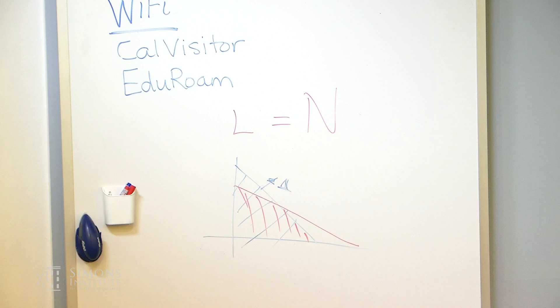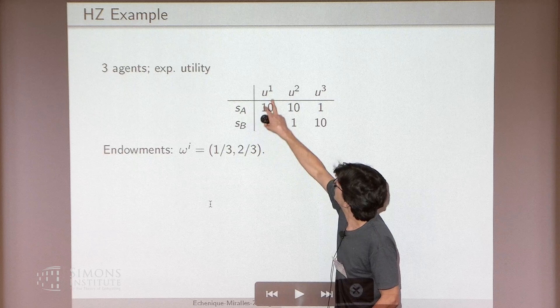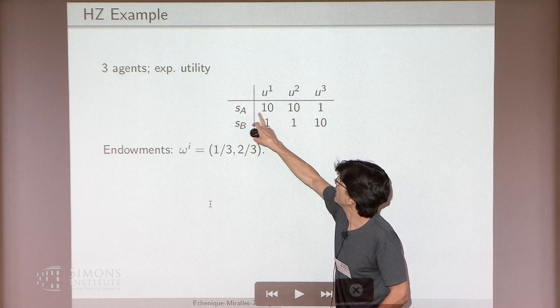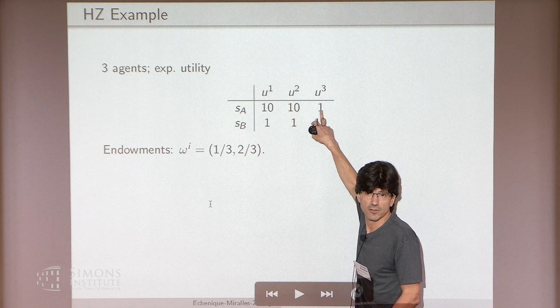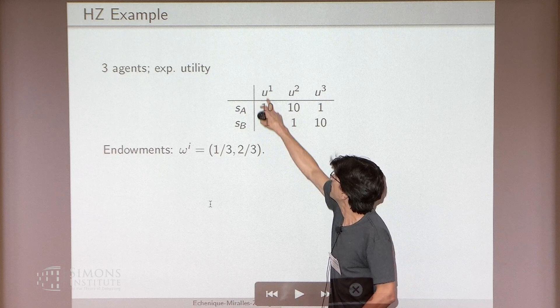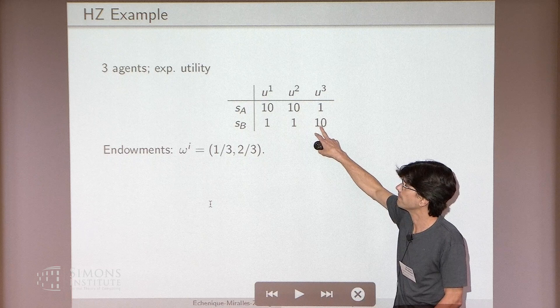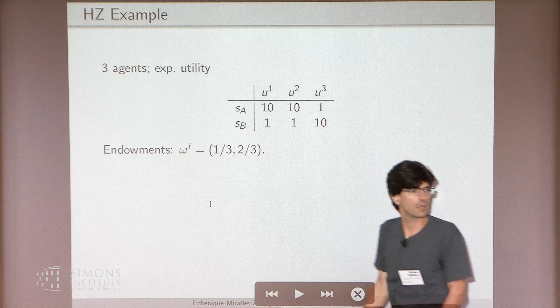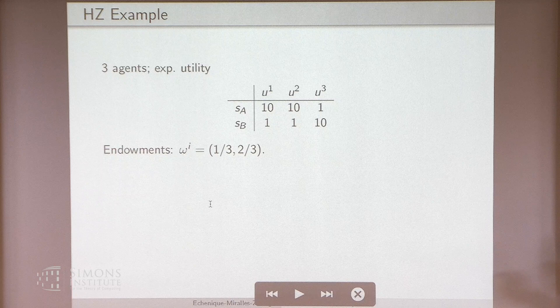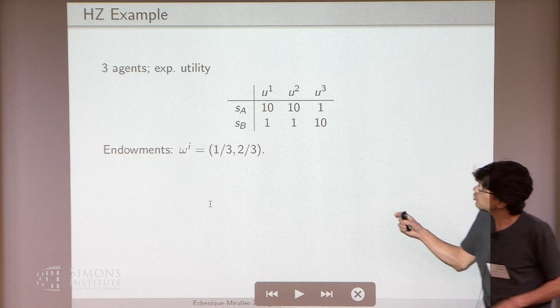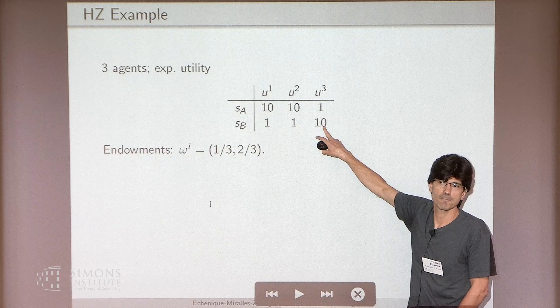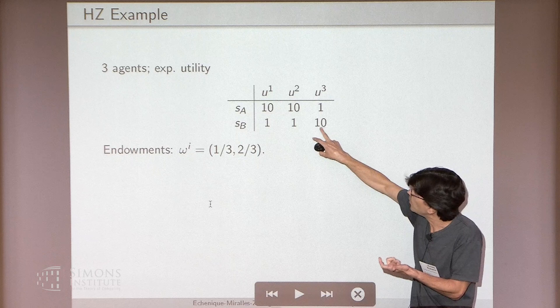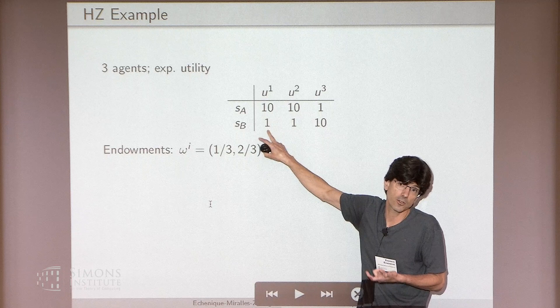The example has three agents and two objects, but there are two copies of the second object. The utility functions are linear: if you get probability 1 of object A, you get 10 if you're agent 1, 10 if you're agent 2, and 1 if you're agent 3. If you get object B or its copy, you get 1 if you're agent 1, 1 if you're agent 2, and 10 if you're agent 3. The endowments are uniform: 1/3, 1/3, 1/3. There's an obvious allocation: give one copy of B to agent 3, and split 50-50 chance of object A between agents 1 and 2, with the remaining 50-50 on object B.